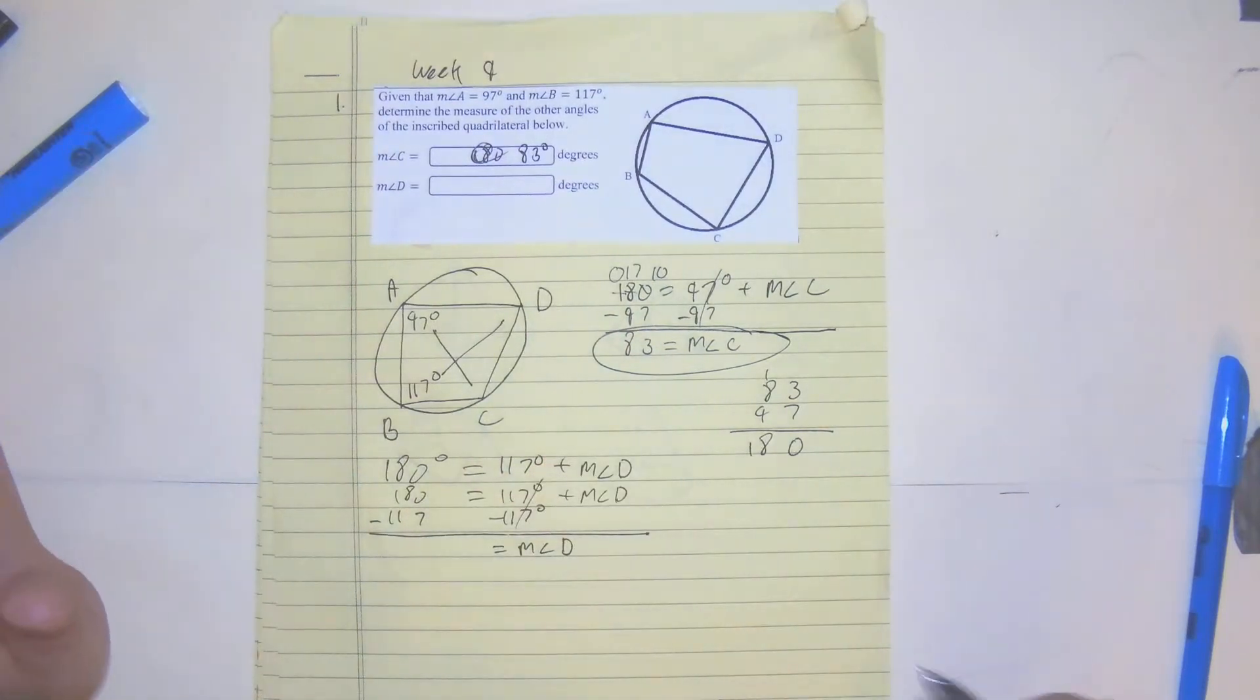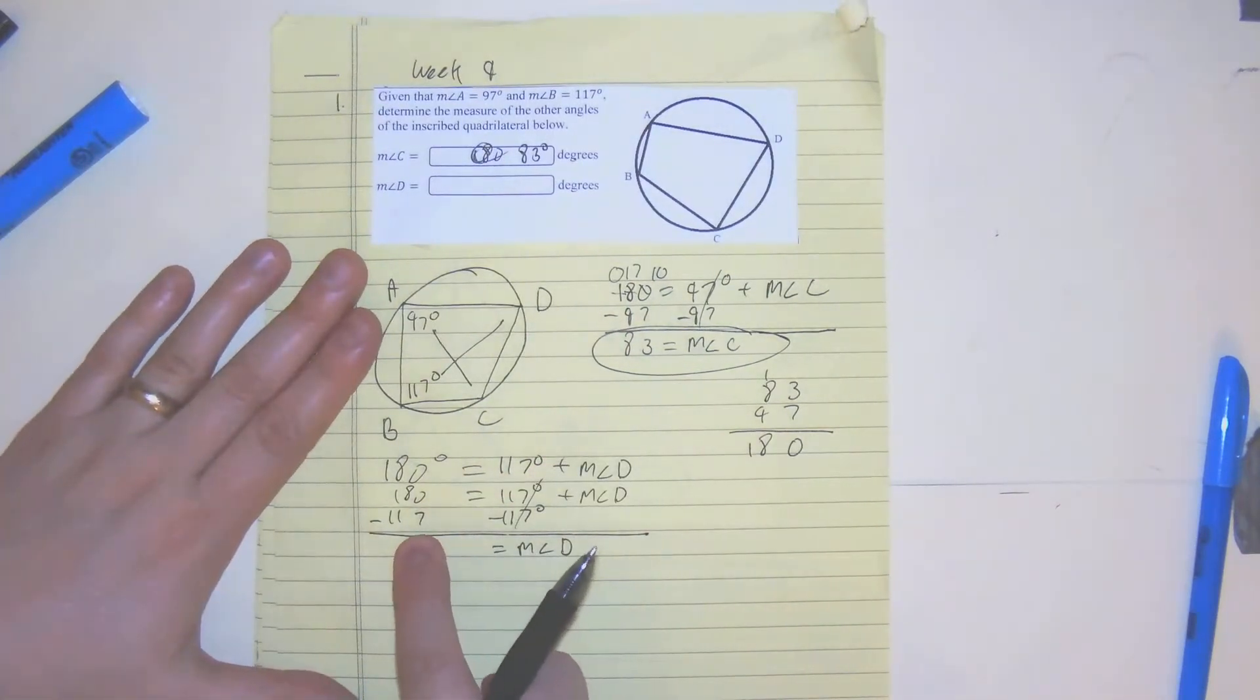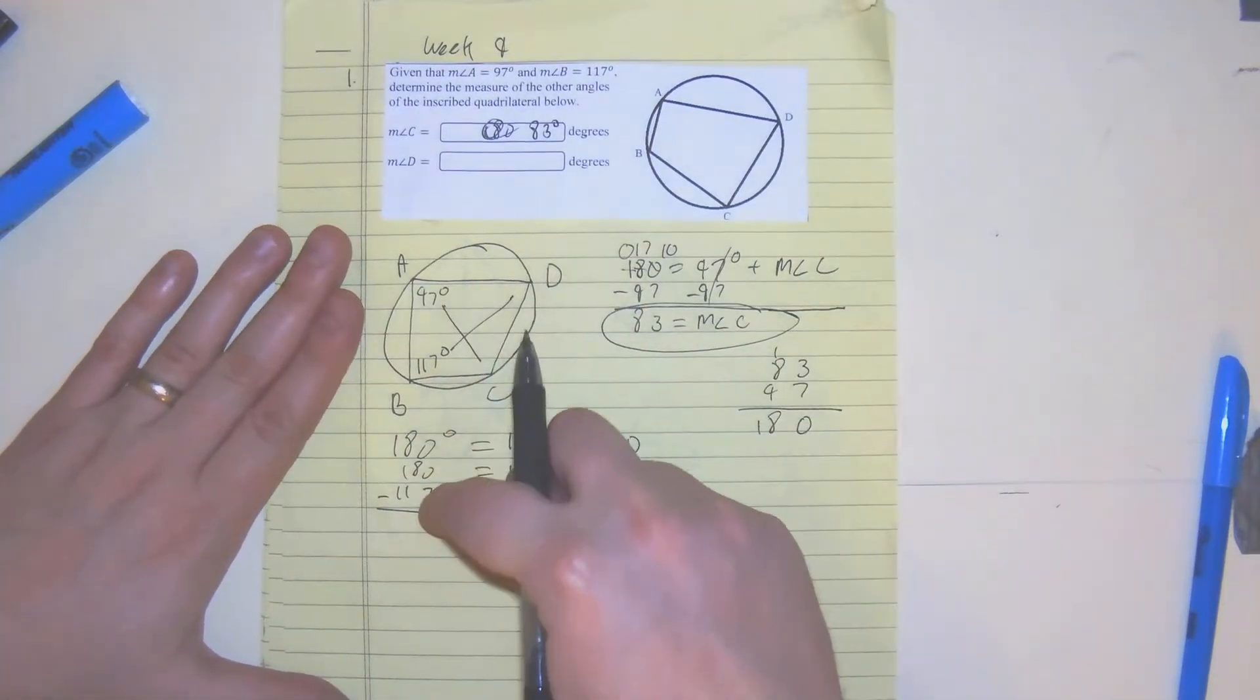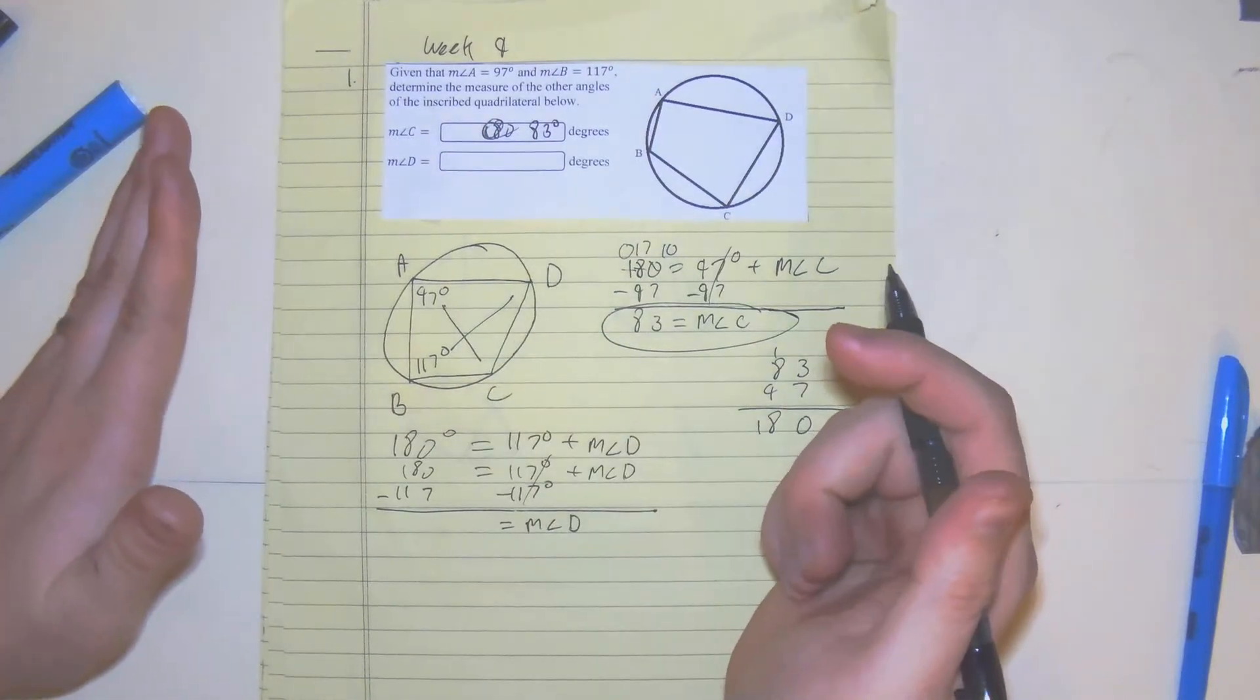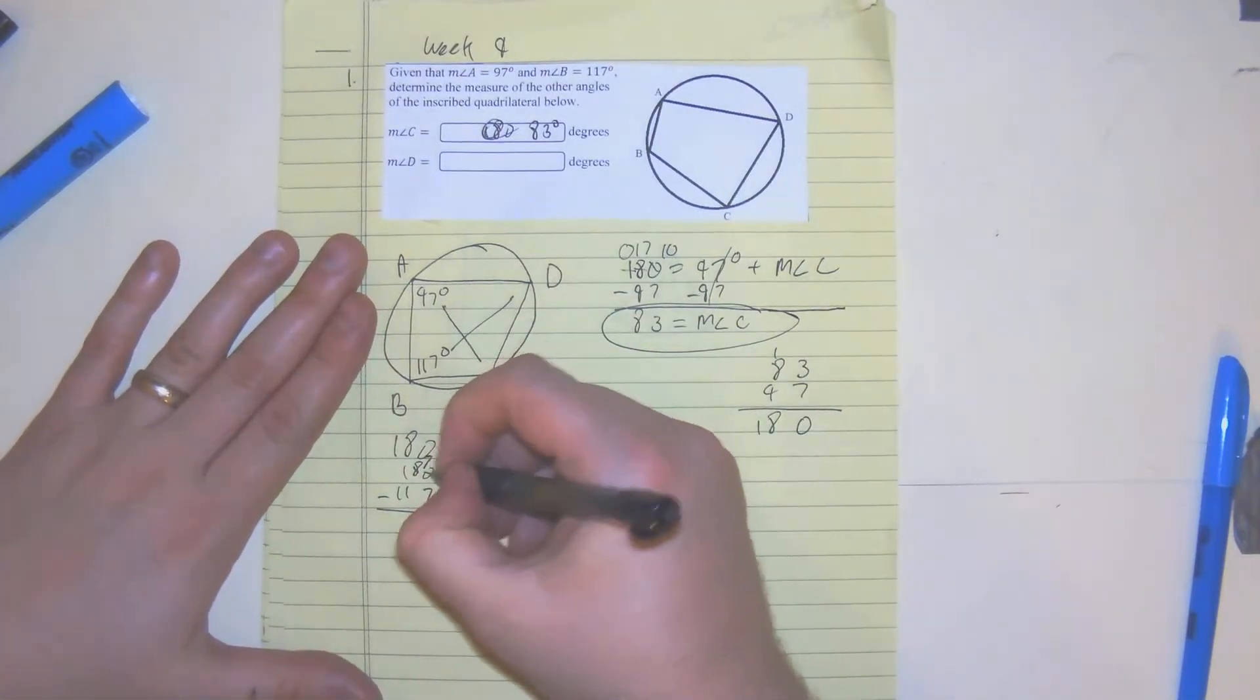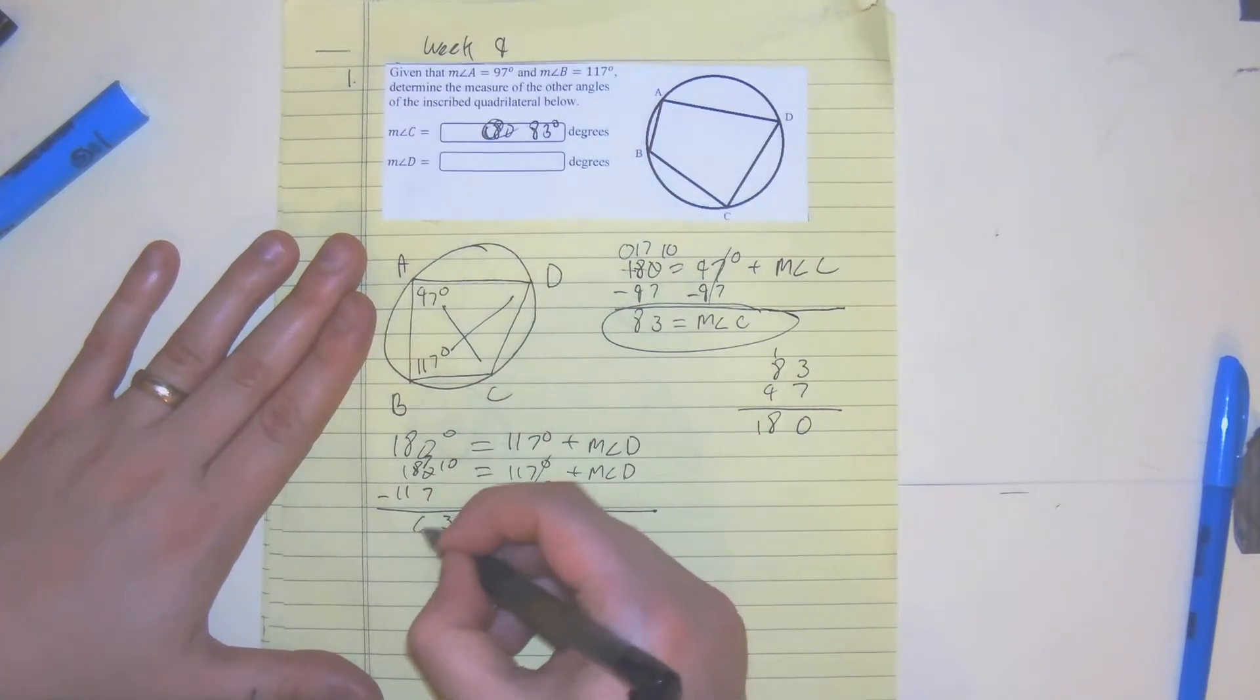Again, we don't have a calculator. It's okay to do this. Try not to do it in your head because you're more likely to make mistakes. You could do this and say it's going to be about 63 is what my guess would be. 7, 10, 3, 6, 0. So the measure of angle D should be 63 degrees.